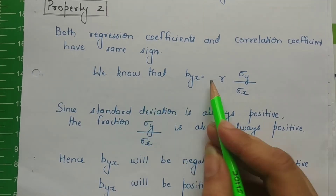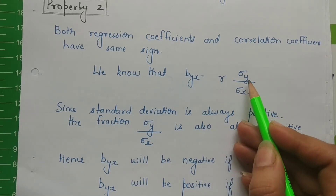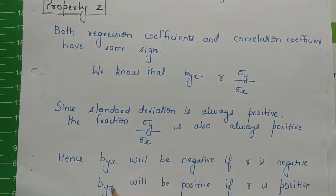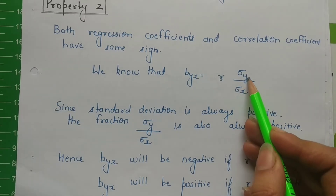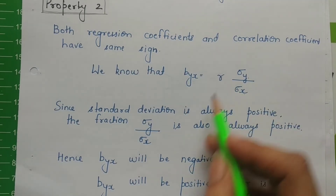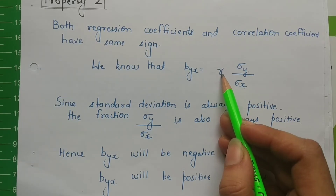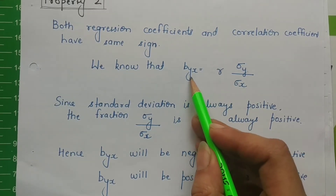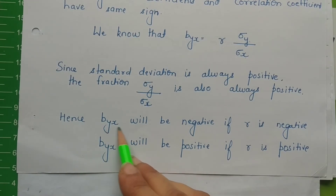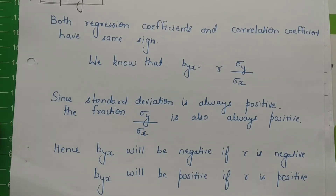How can this be? Because we know that the formula for the regression coefficient of y on x is b_yx = r × (standard deviation of y / standard deviation of x). Since standard deviation is always positive, both σ_y and σ_x are positive, so the entire expression's sign depends on r. If r is positive, b_yx will be positive; if r is negative, b_yx will also be negative.